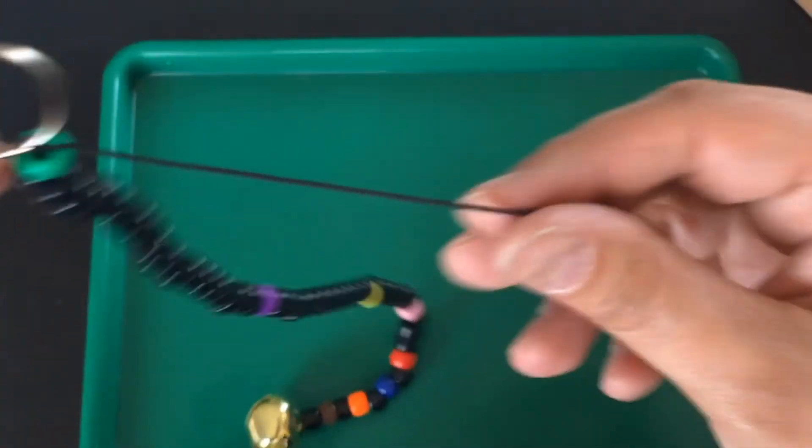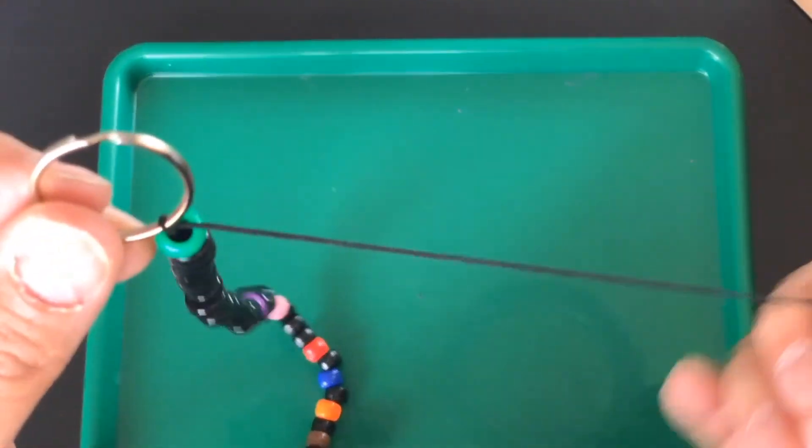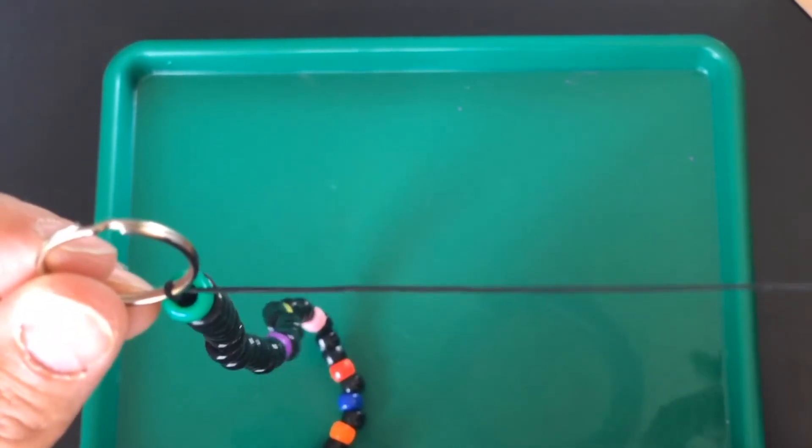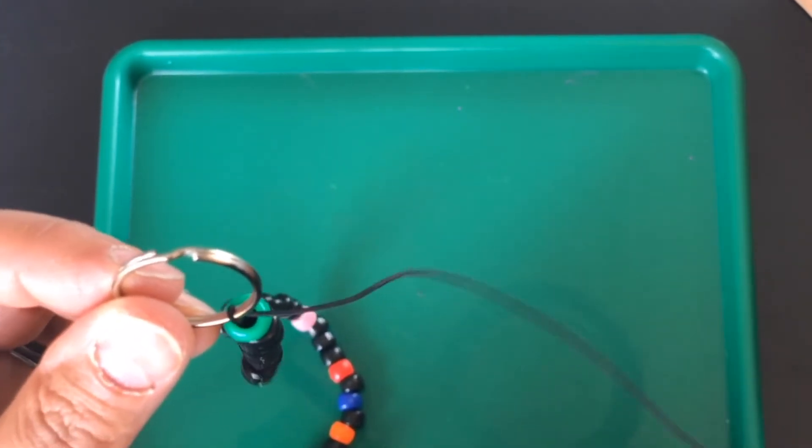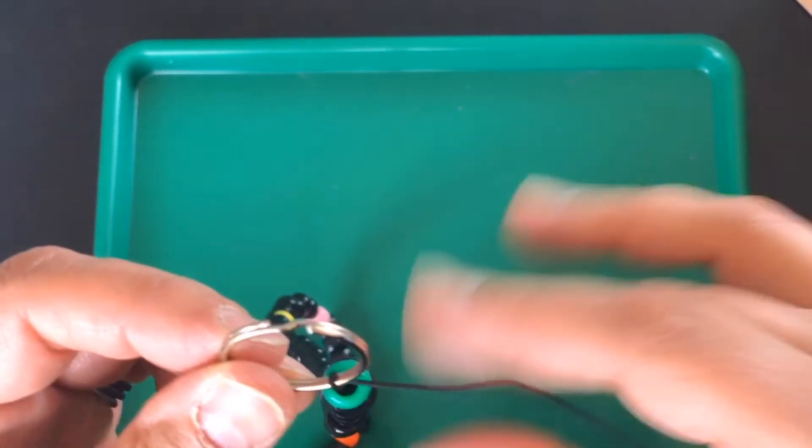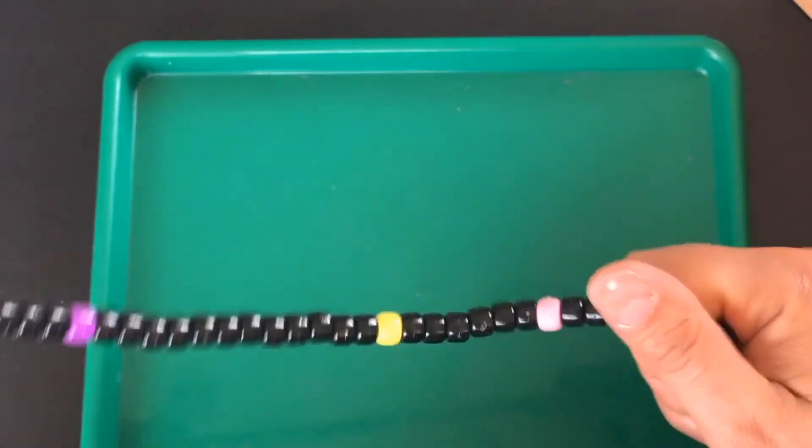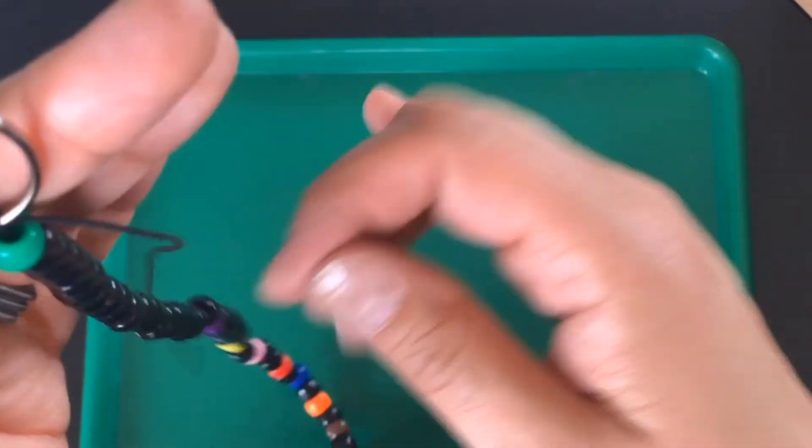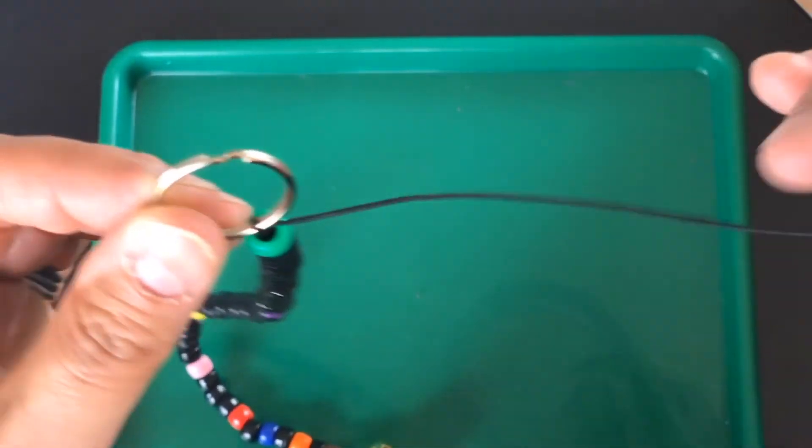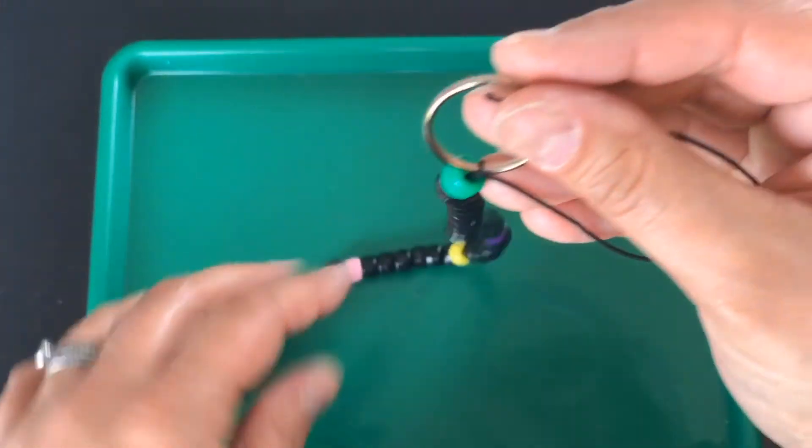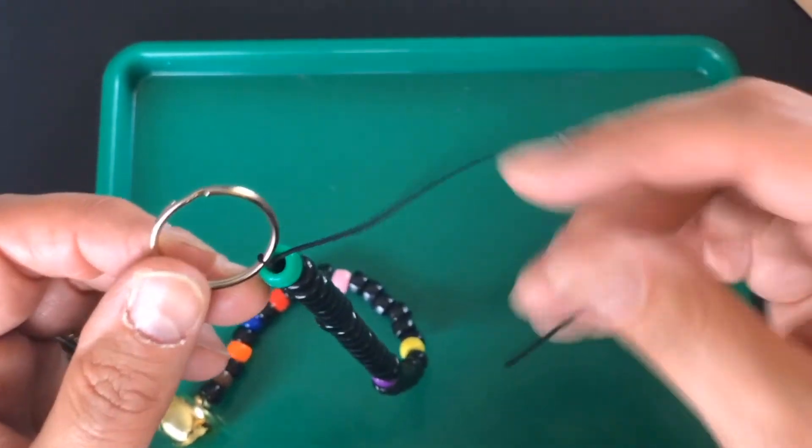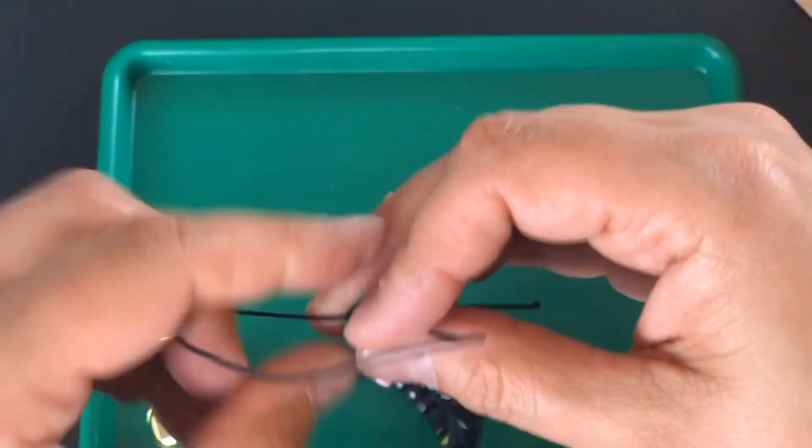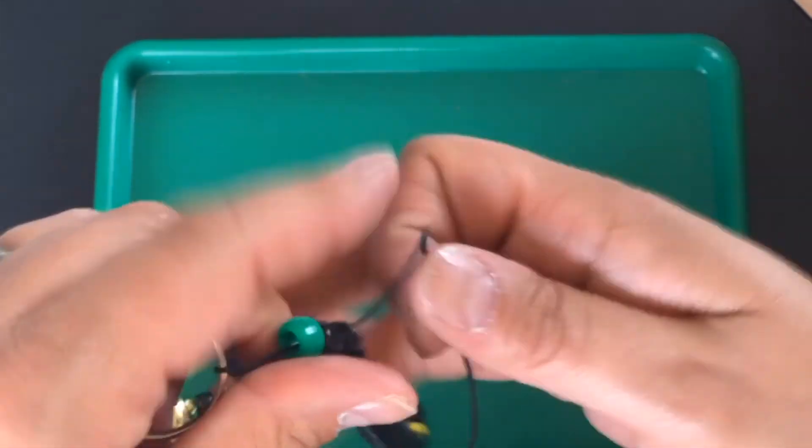Now I have all of this excess cord here and you may be tempted to cut it off but I'm going to tell you another bit from experience, a pro tip, that sometimes you might, you know, this might break somehow or it might come undone and you may need to re-tie it. It'll just be easier if you have the extra cord. So we're going to just put the excess down into the beads like we did with the jingle bell.